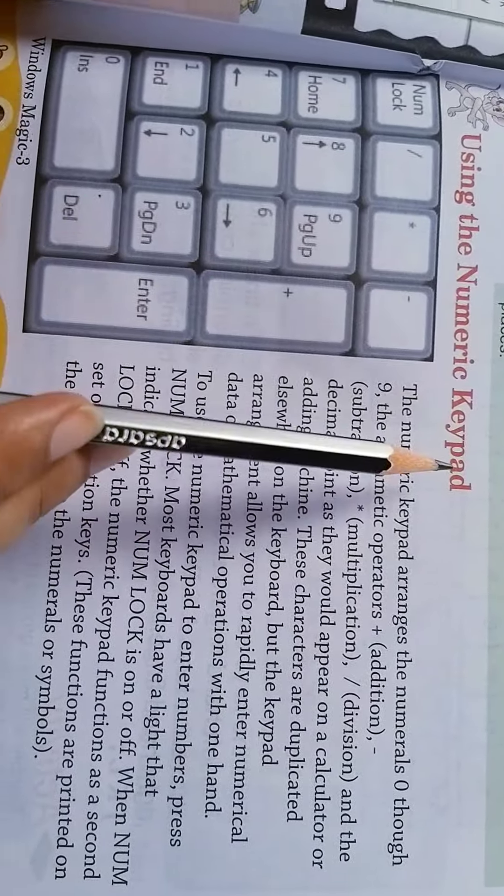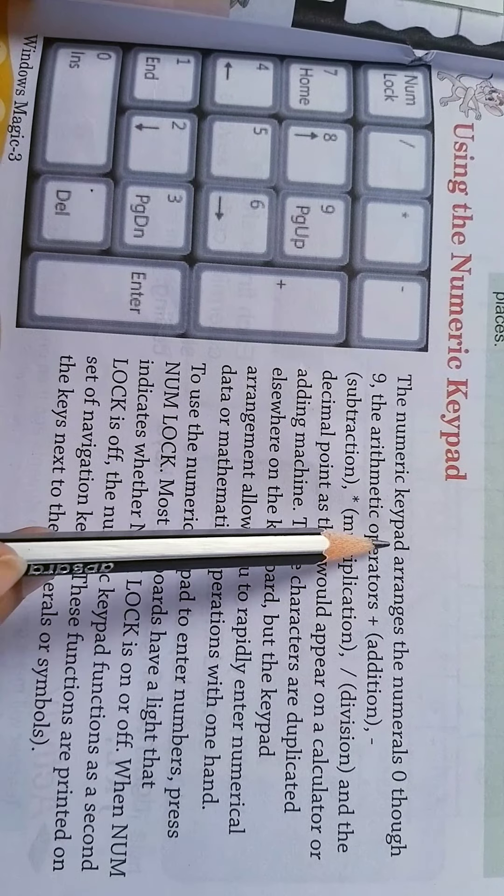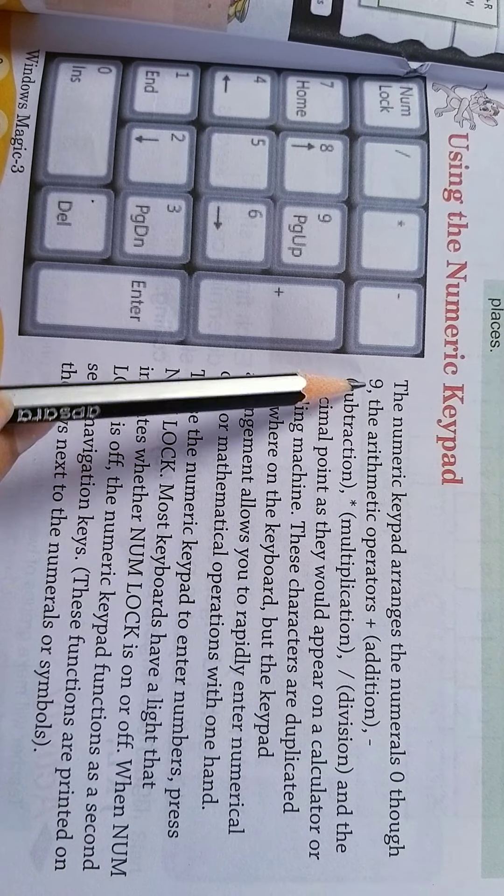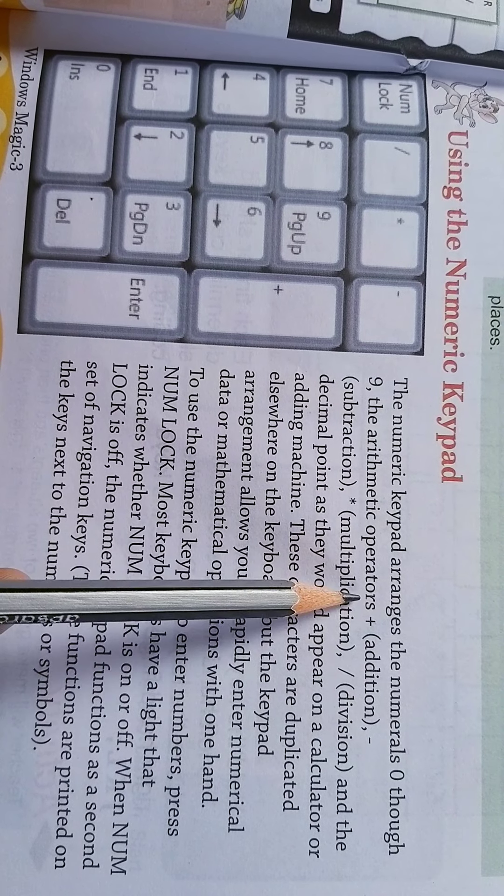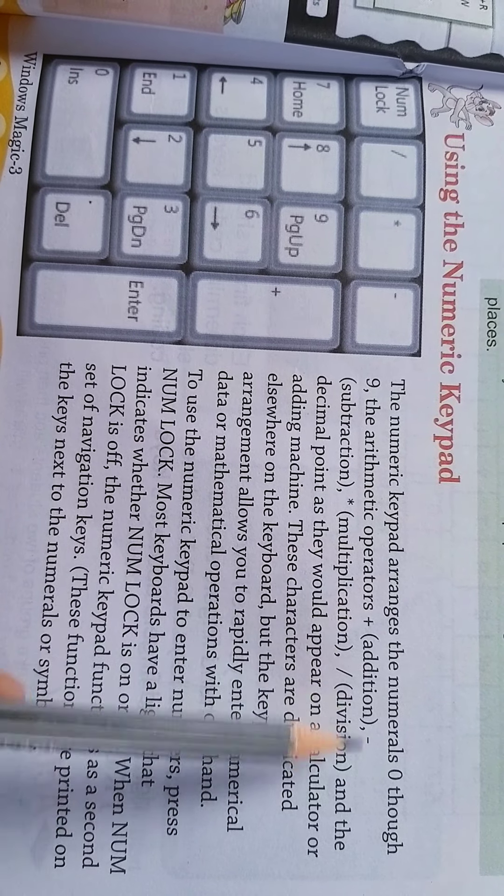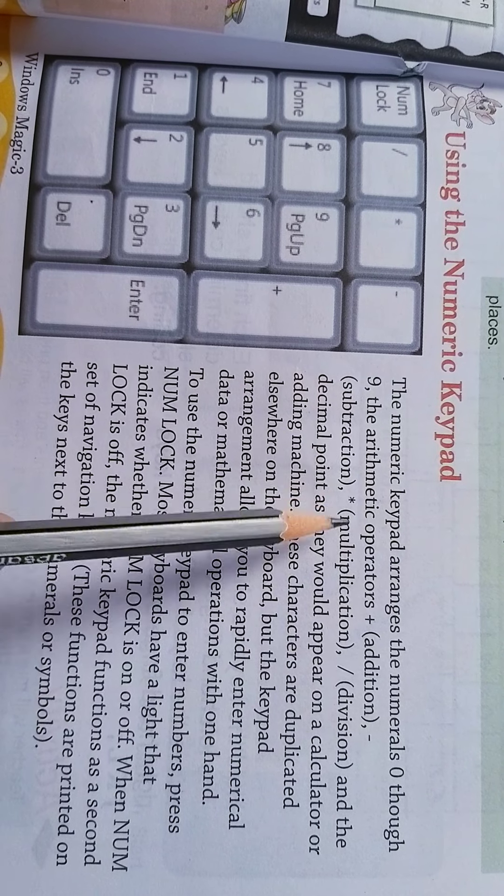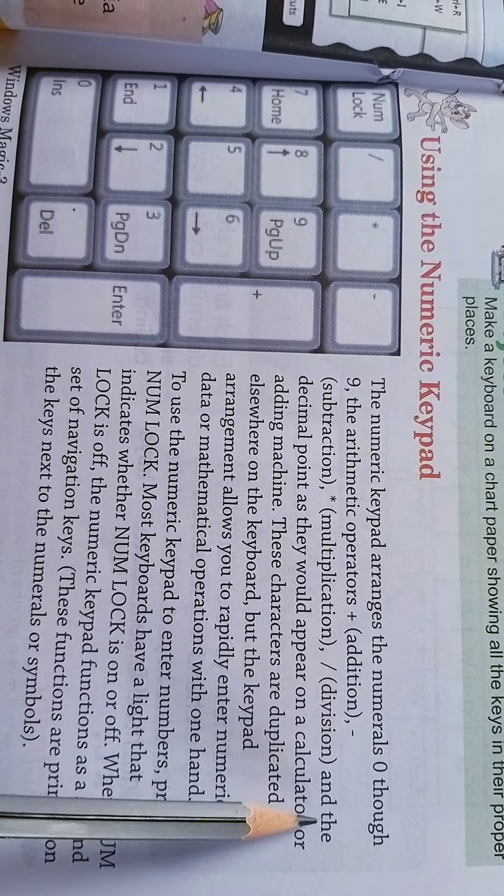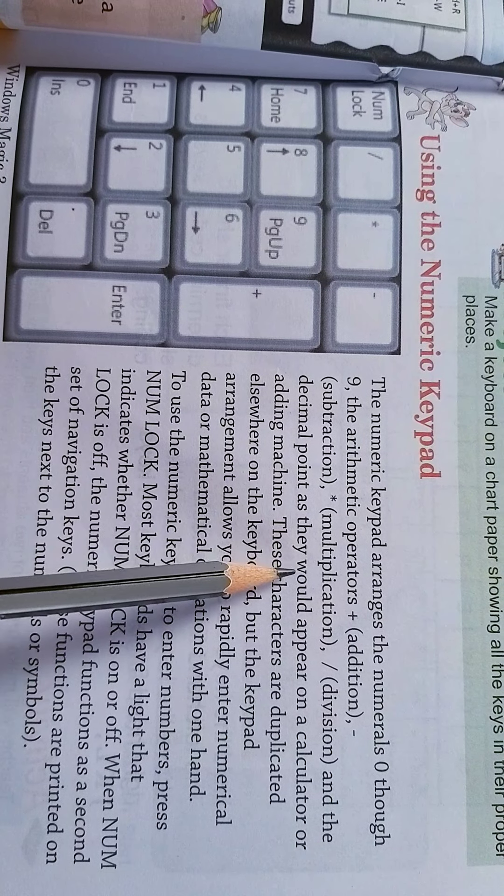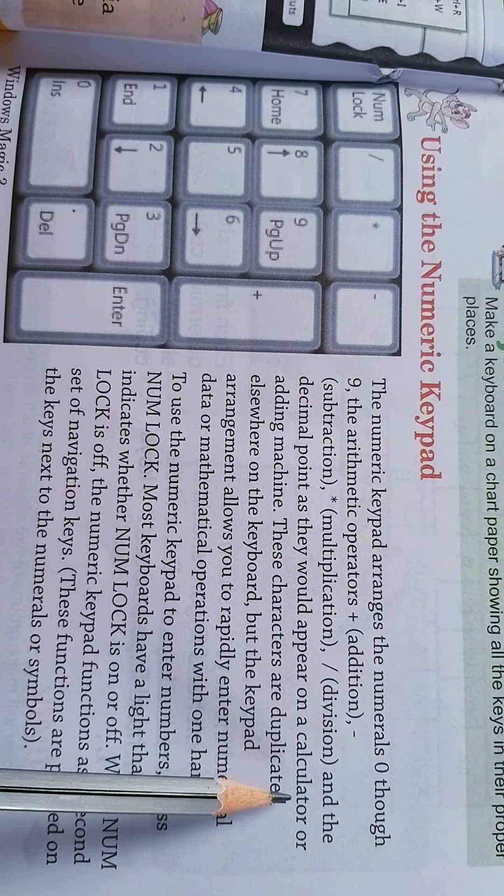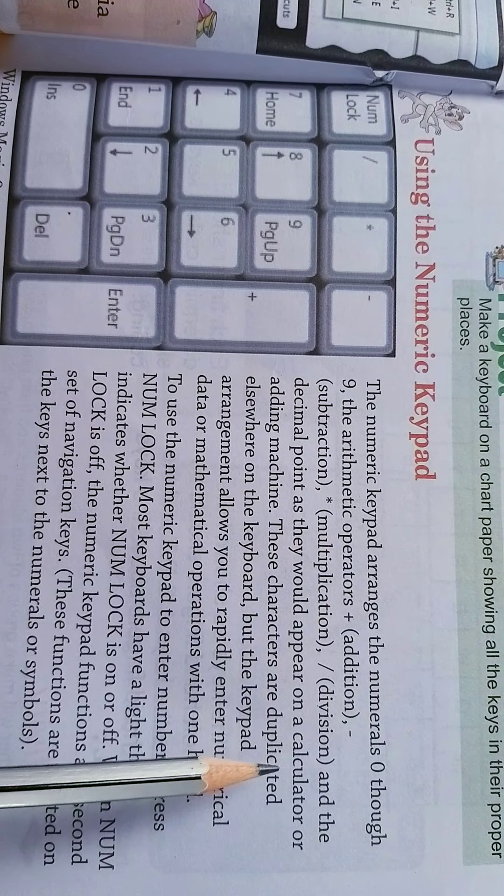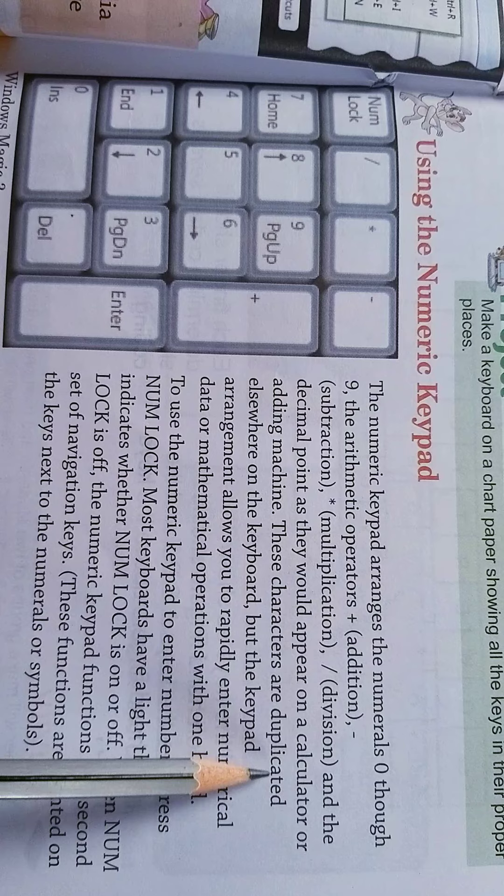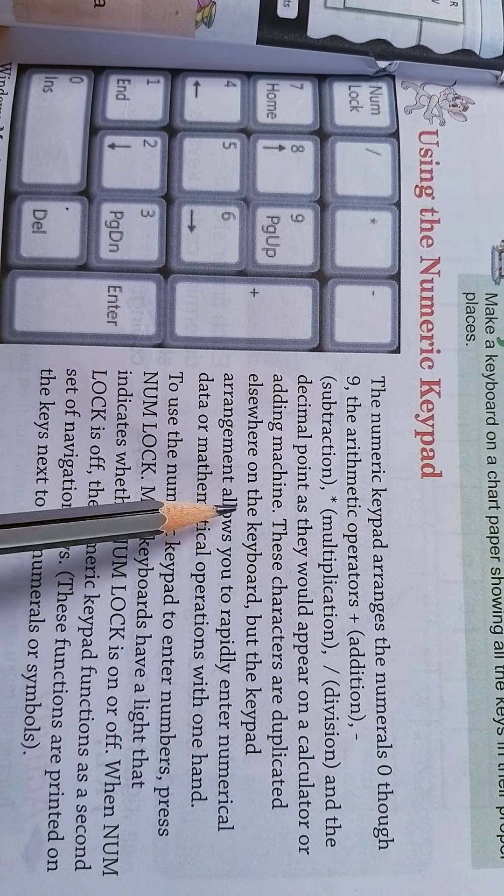Using the numeric keypad. The numeric keypad arranges the numerals 0 through 9, the arithmetic operators plus means addition, minus means subtraction, this is the sign of multiplication and this is division, the decimal point as they would appear on a calculator you can see in the picture or adding machine. These characters are duplicated elsewhere on the keyboard.